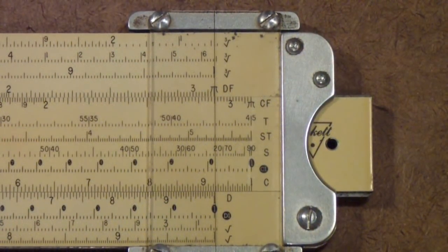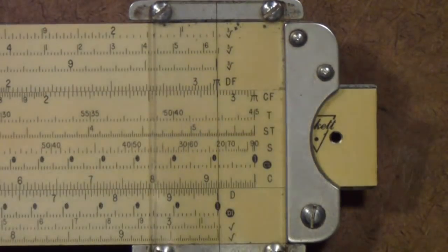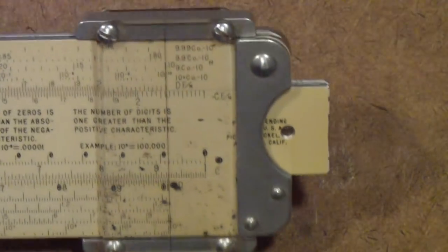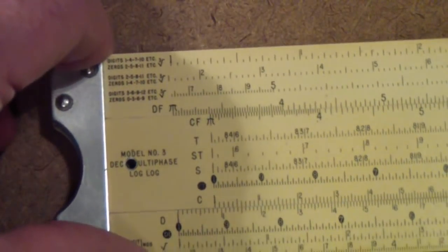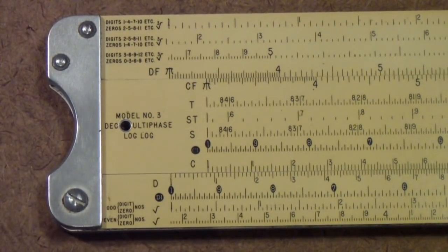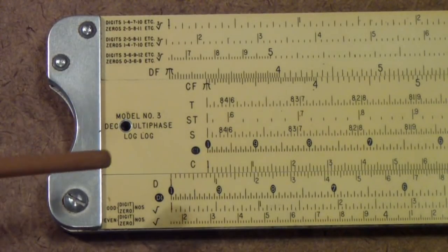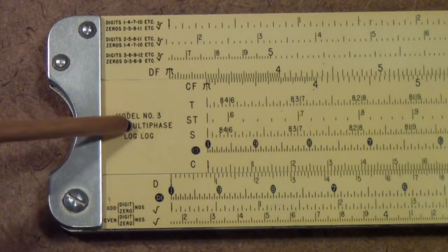This is a Pickett Model 3. You'll notice, you can tell from the glare, that this is a glass cursor. Glass on both sides. It's an early one. There were a sequence of rules that Pickett developed in the 40s. One of the first was the Model 1, quickly replaced by the Model 2, which lasted for a couple more years, and then the Model 3. And that's this one.